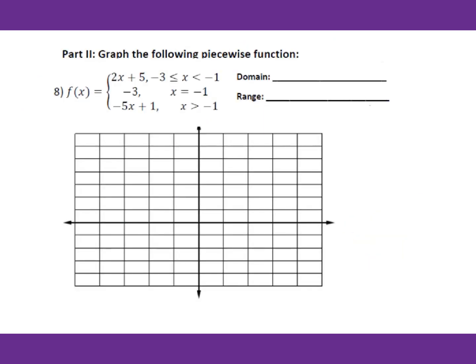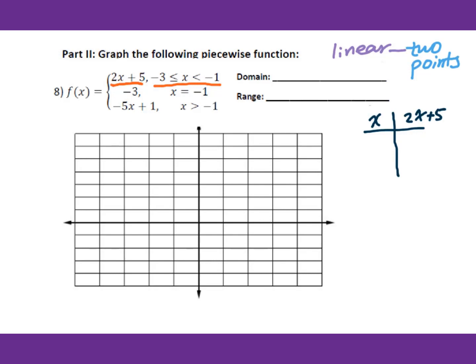Now let's go to number 8. This piecewise function is about linear functions. Remember, for a linear function we only need two points to sketch a graph. For the first piece, f(x) equals 2x plus 5 for x between negative 3 and negative 1. We use the two boundaries: plug in negative 3 to get 2(negative 3) plus 5 equals negative 1, and plug in negative 1 to get 2(negative 1) plus 5 equals 3.